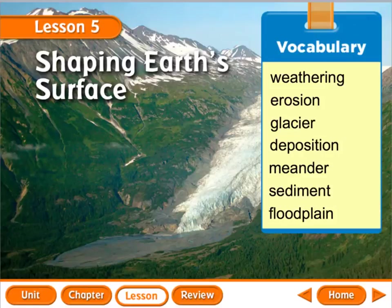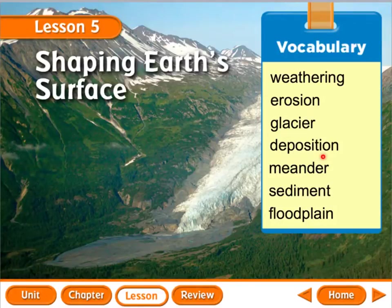This lesson is for 5th grade. This is Chapter 5, Lesson 5: Shaping Earth's Surface. It's the last lesson in our unit over our dynamic earth. In this lesson, we're going to talk about some different things. Some vocab you're going to hear is weathering, erosion, glacier, deposition, meander, sediment, and floodplain. We'll be focusing a lot on weathering, erosion, and deposition, so let's get to it.